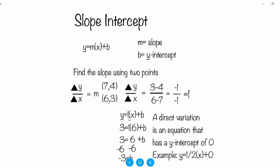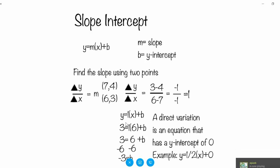So you end up with the equation y equals one x plus b, and then you have to plug in one of your coordinates to find b. I chose six and three, and you can see I plugged it in: three equals one times six plus b. Then you multiply six by one and get three equals six plus b, and then you subtract six from both sides so you have only b on one side and you get negative three.